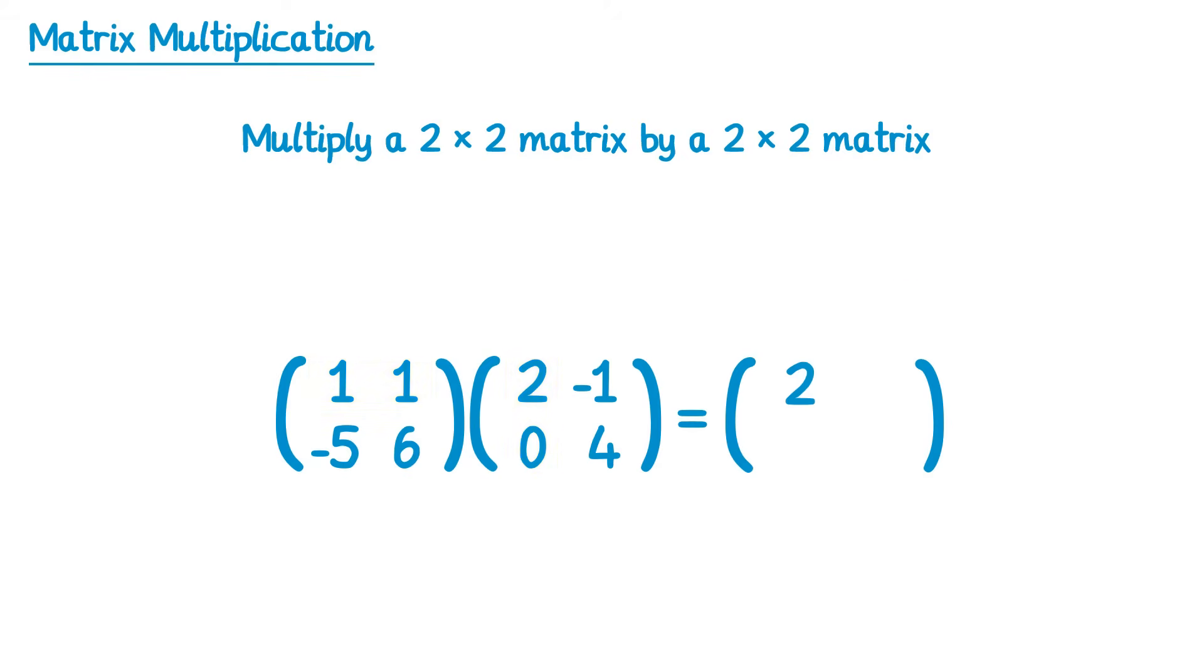Now this time we'll start with the first row again, but move on to the second column. So we'll do 1 times negative 1, which is negative 1, and then this second one here times 4, which gets you plus 4. And negative 1 plus 4 gets you 3.